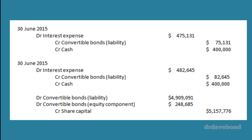Now for the conversion entry. At the end of this year the balance in the liability is 4.909 million — that's the balance sitting there in that account. Emma decides to convert at this point in time, which means the liability gets de-recognized because she's effectively waiving those rights to future cash flows — so we get rid of that balance. The equity component — the 248 thousand — we get rid of as well. The share capital becomes equity; this is in effect a reclassification, moving the liability into equity, while the existing equity component simply changes what it's called.